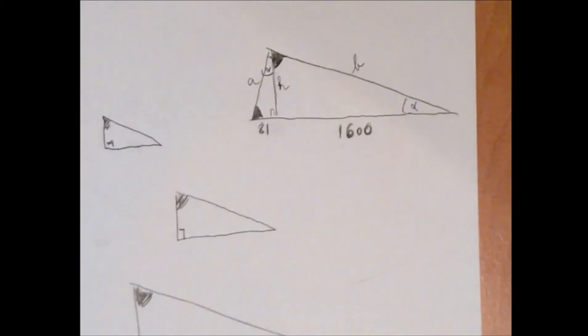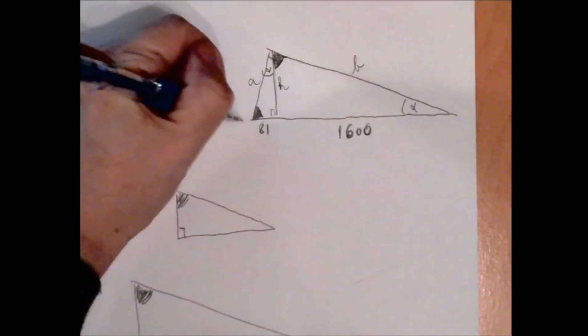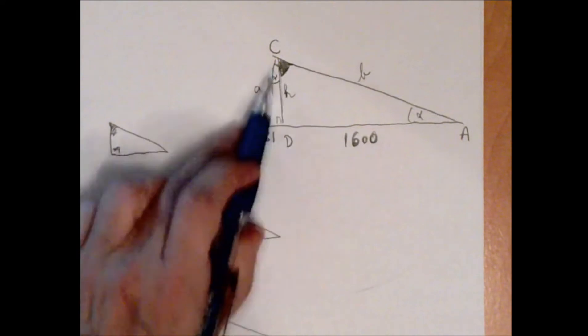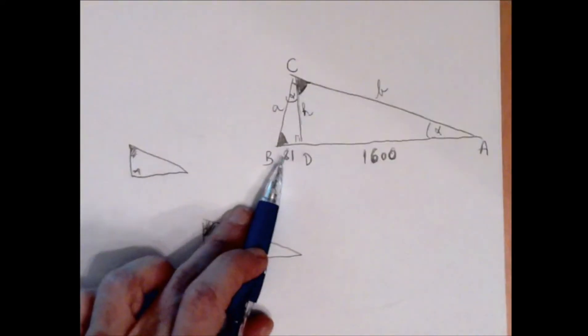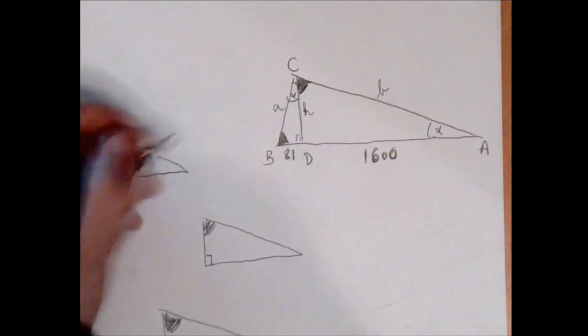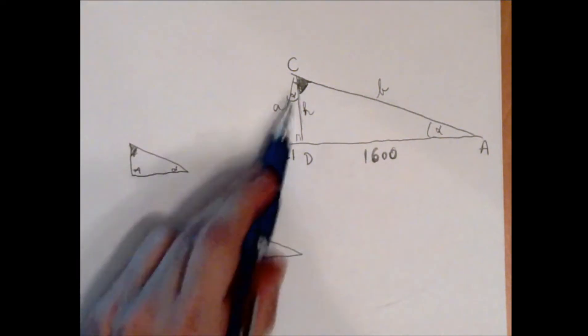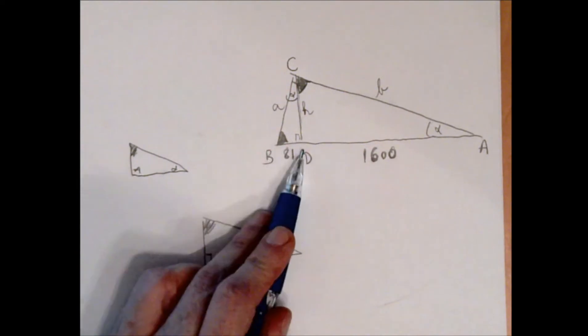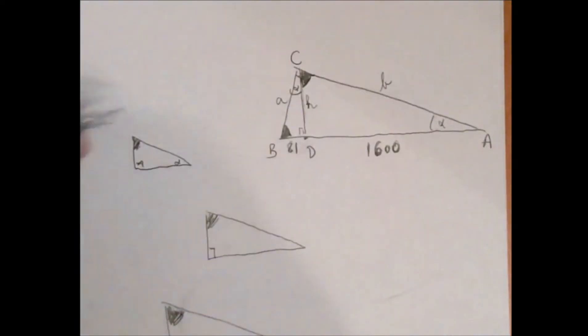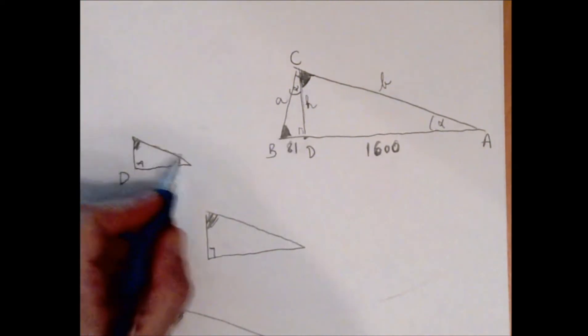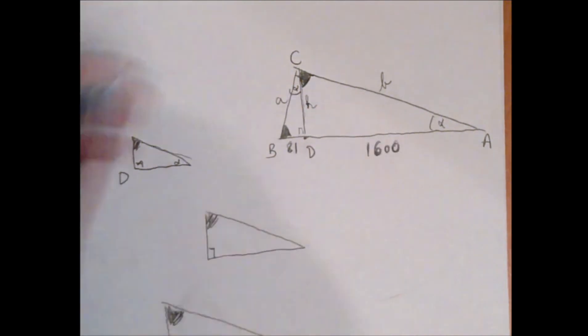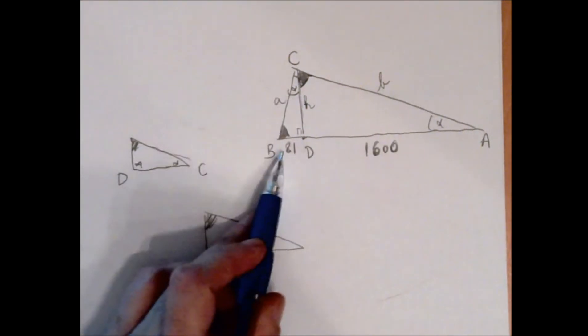The darkened angle is beta. Let's start with this small little triangle. The smallest angle is alpha and the darkened angle is beta. Now that we understand the angles, we can find the points: at the right angle is point D, at the smaller angle alpha is point C.